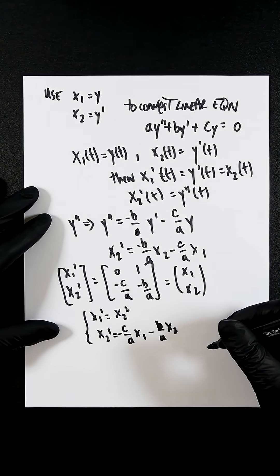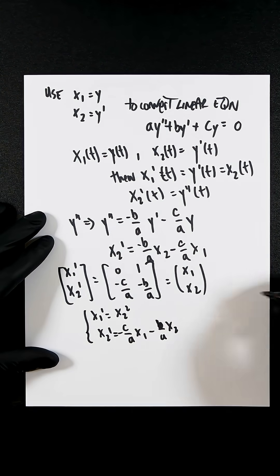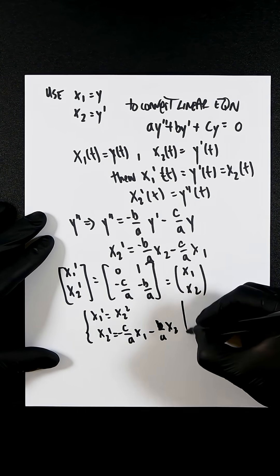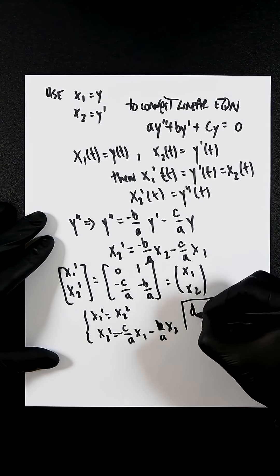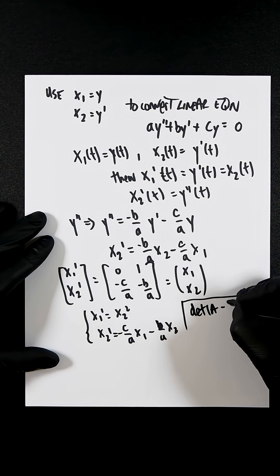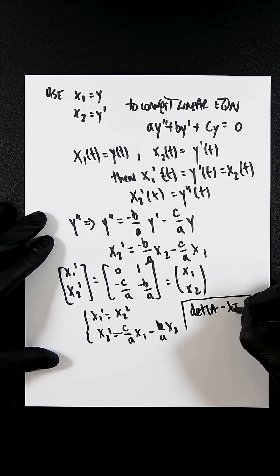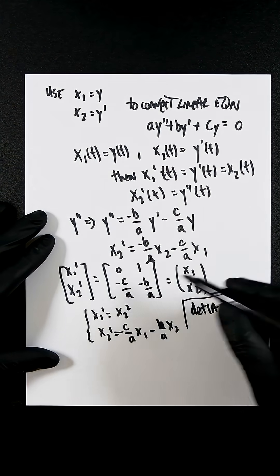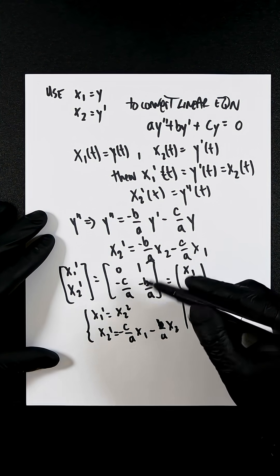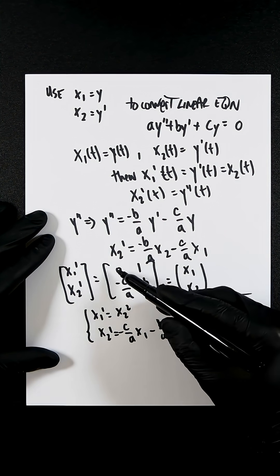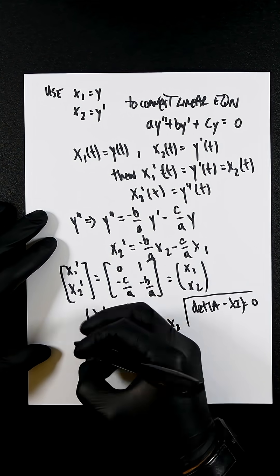So our characteristic equation is going to be, I'm going to try and squeeze this in so I don't have to waste more paper, is going to be A minus lambda I which equals 0. So therefore we basically take this and these two terms remain the same. This is minus lambda and this is minus lambda.